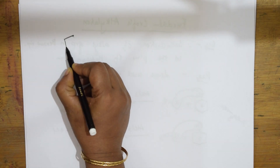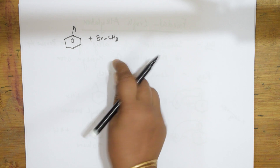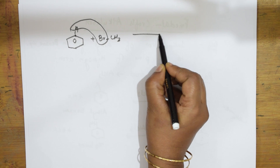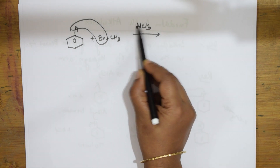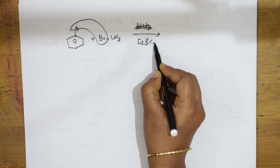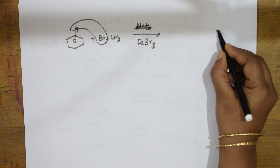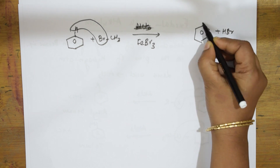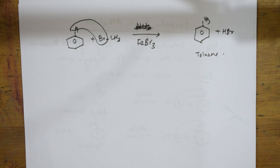Now instead of chlorine, suppose we take bromine — alkyl bromide CH₃Br. This is your benzene plus alkyl bromide. HBr comes out, and we get toluene. But be careful: for bromine, you should not use AlCl₃. For bromine you are going to use FeBr₃ (iron bromide) as the Lewis acid.